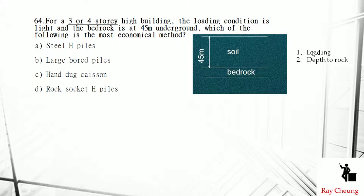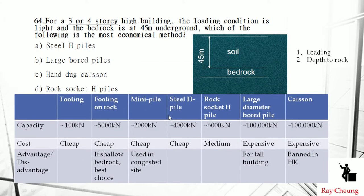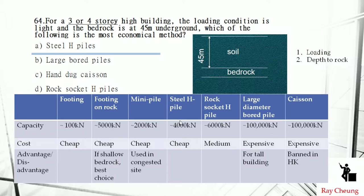For pile selection: if the loading is large, think about a large-diameter bored pile. If the loading is less, think about a steel H-pile. The second criterion is the bedrock level — for example, if it is at 45 meters deep, it is considered deep. The disadvantage of the steel H-pile is that it is quite noisy. The middle option is the socket or steel pipe pile.